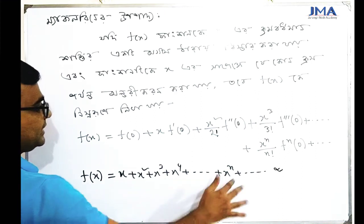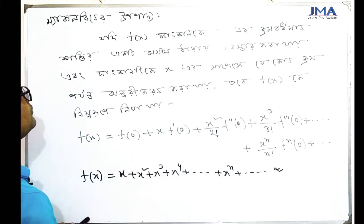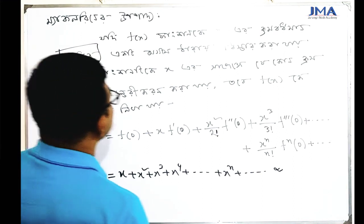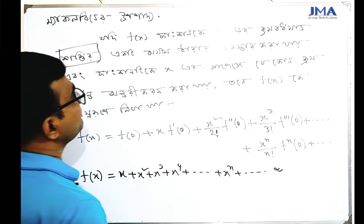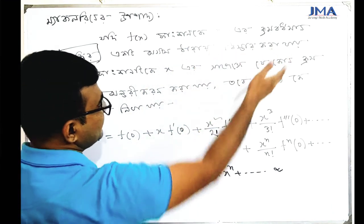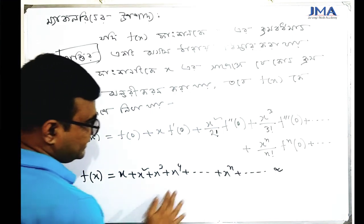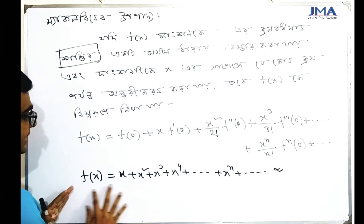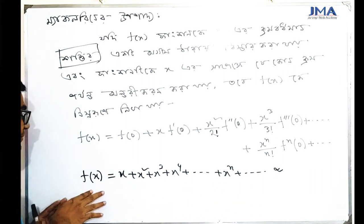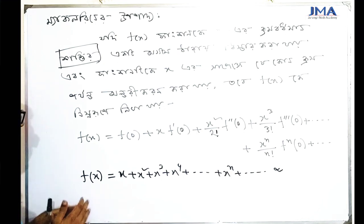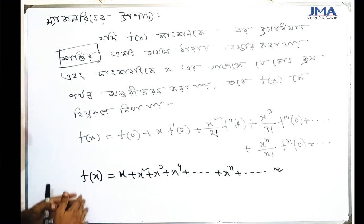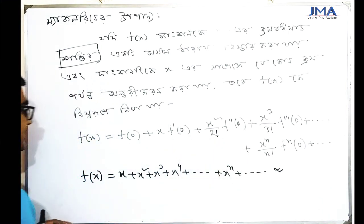Here we have a function. The coefficients are 1, 1, 1, 1... First of all, the function will be expressed as a power function. This is the correct power function we have here.